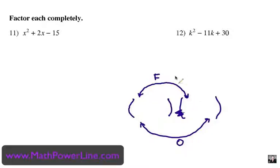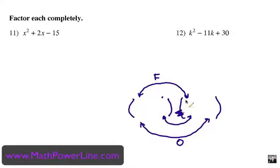The I in FOIL are the insides — that is the second term in the first binomial and the first term in the second binomial. And L is the last, so the last term of each binomial.